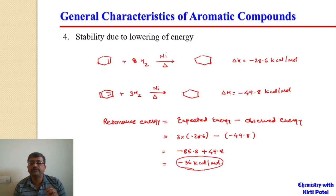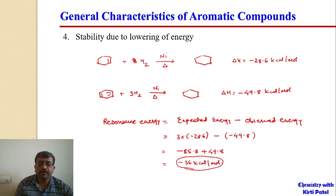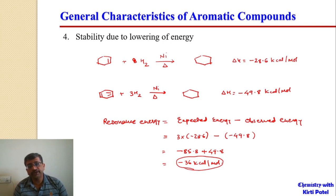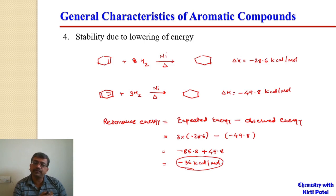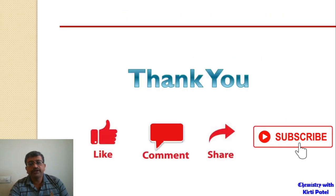Benzene is stable by 36 kcal/mol — this is the resonance energy that accounts for the stability of the benzene ring. If there were three isolated double bonds it should release 85.8 kcal/mol, but it is already lowered by 36 kcal/mol due to resonance. In the next lecture we will see Hückel's rule and different aromatic compounds like benzenoids, non-benzenoids, and heterocyclic or heteroaromatic compounds. Thank you.